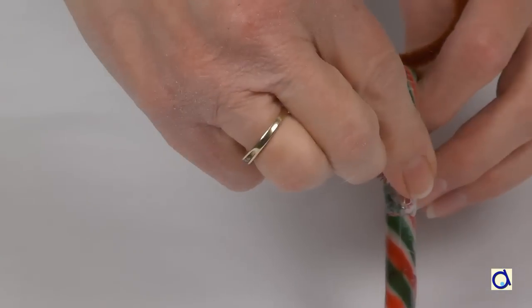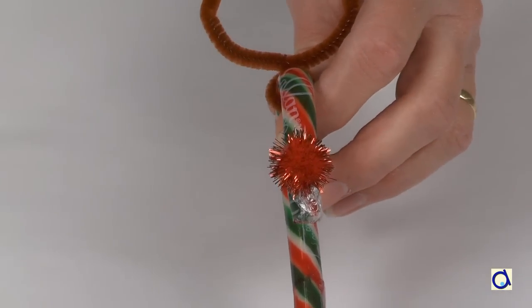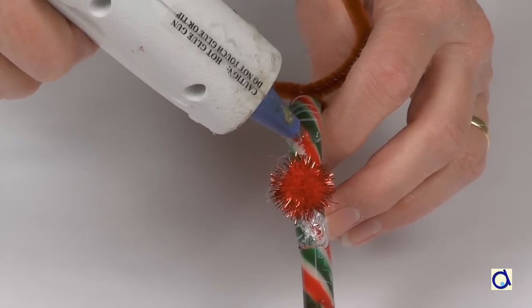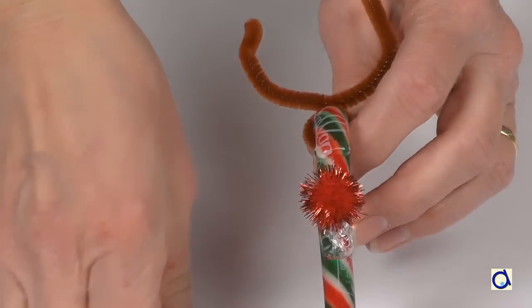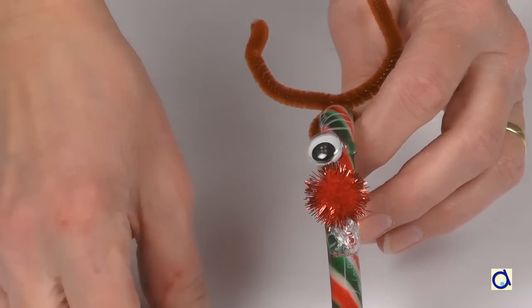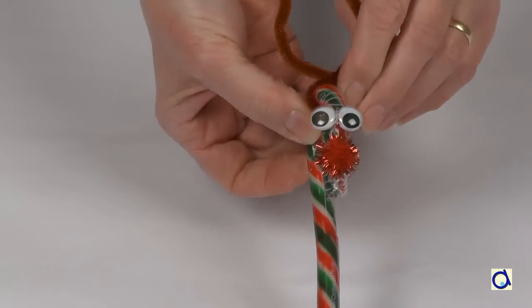Then put a dot of hot glue on the short end of the cane and glue the pom-pom that represents the nose of the reindeer. Put a dot of hot glue and glue googly eyes above the nose.